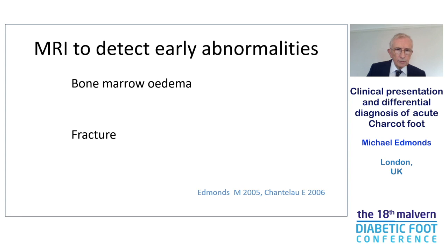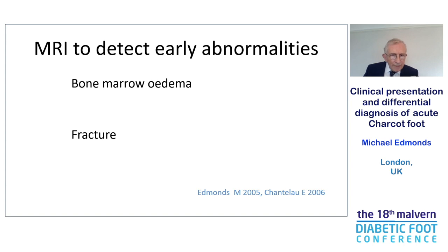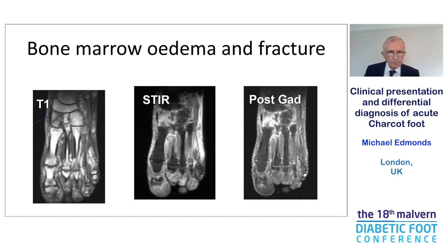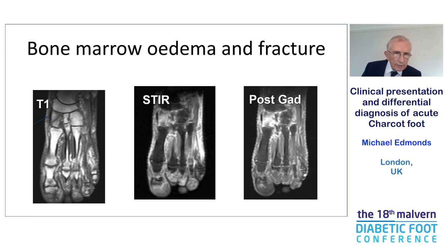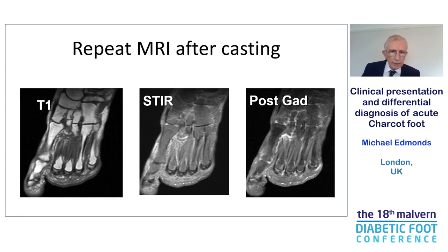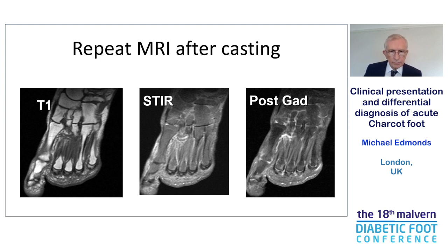The x-ray may be completely normal, and then you have to go to modern imaging techniques. The preferred one is MRI to detect early abnormalities, particularly the inflammatory sign of bone marrow edema and also fracture. On T1, STIR, and post-gadolinium sequences, you can see a fracture line on the medial cuneiform on T1, accompanied by edema on STIR and inflammation on post-gadolinium. The patient was put into a cast, and you can see resolution of changes — almost healed fracture on T1, resolution of edema on STIR, and resolution of inflammation on post-gadolinium.